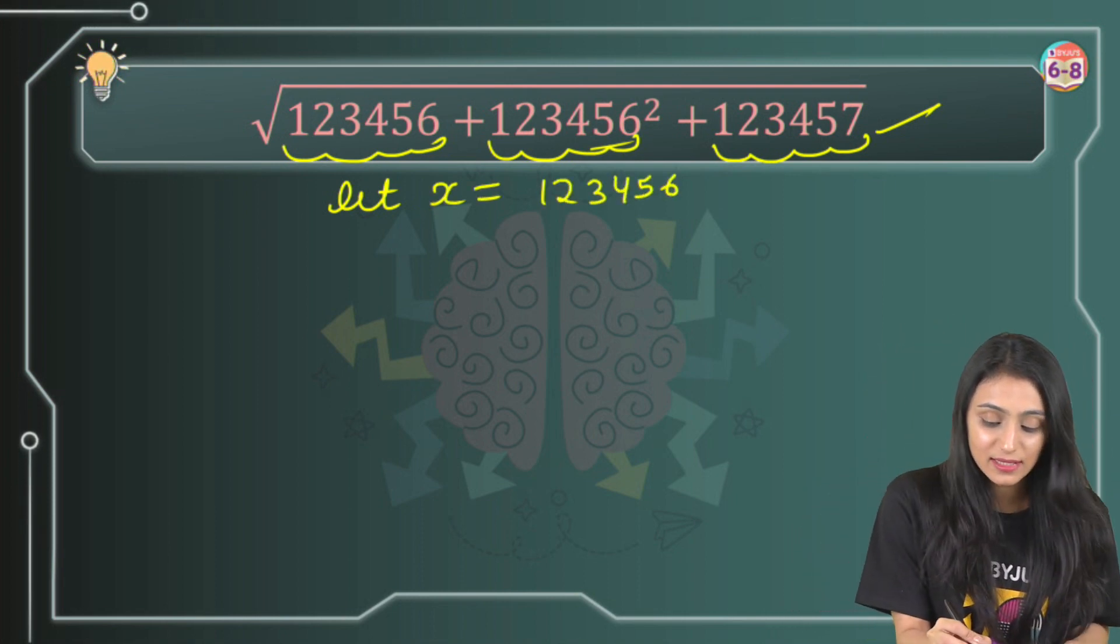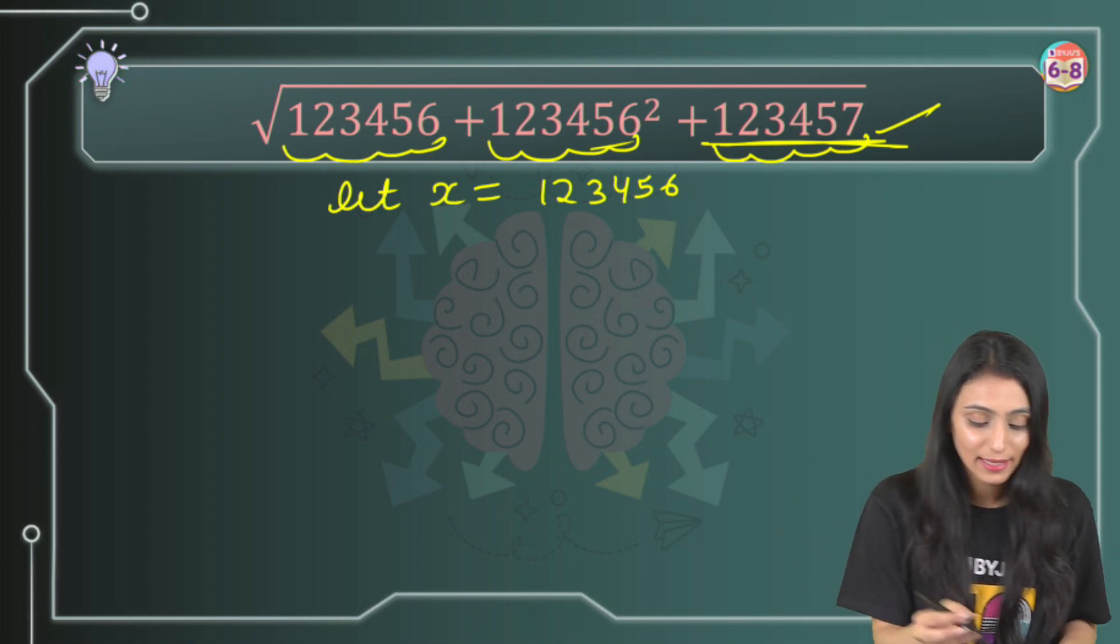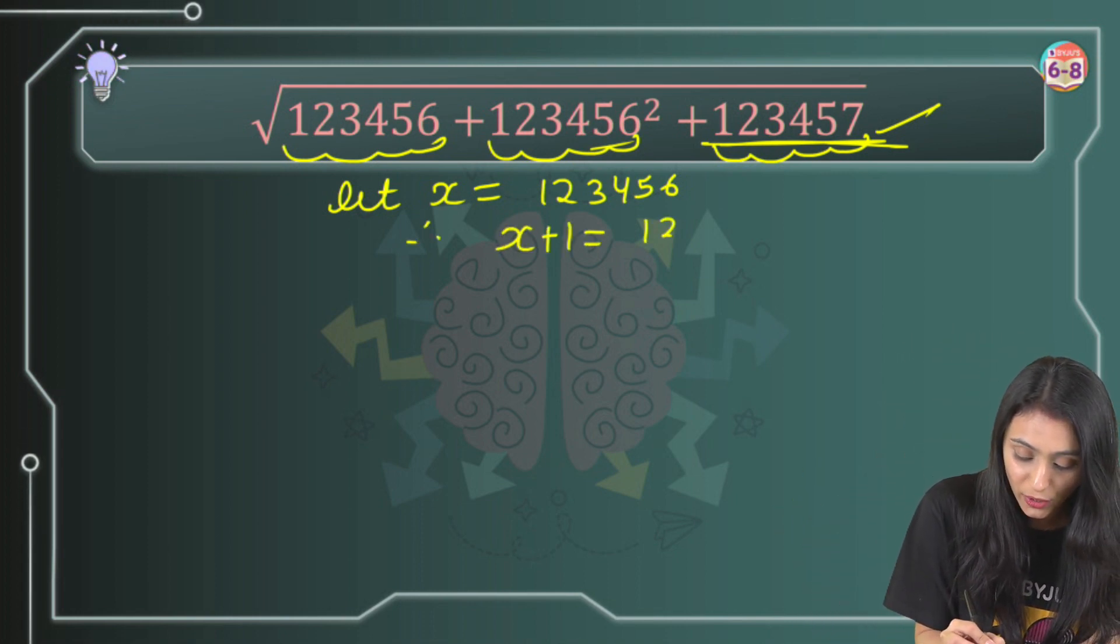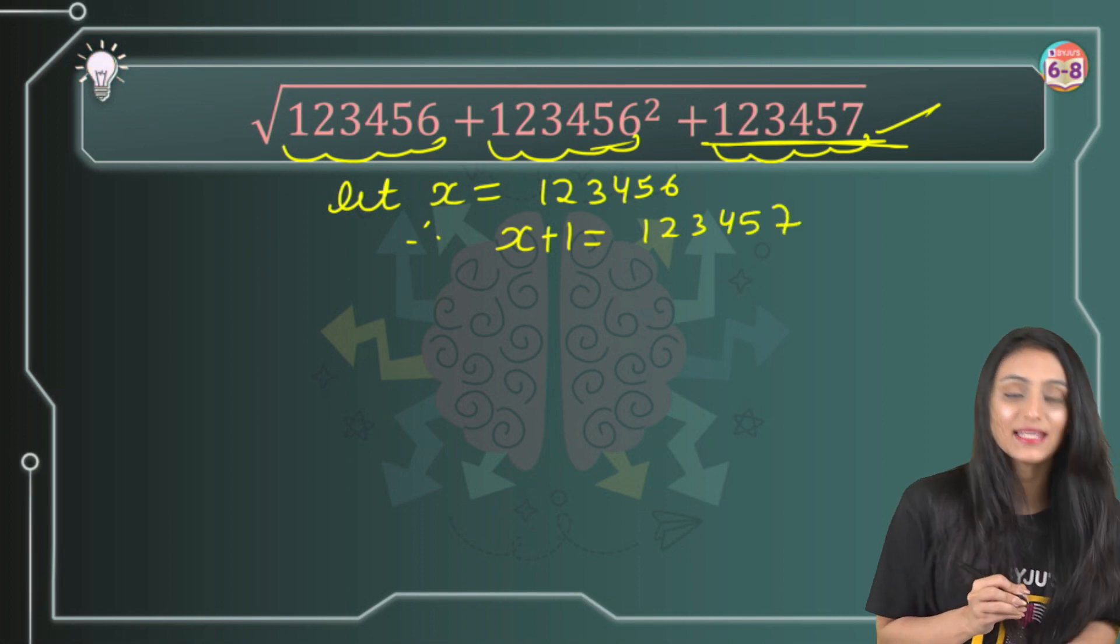Right? So this is nothing that's going to be x plus 1. Therefore, x plus 1 will be equals to 123457.